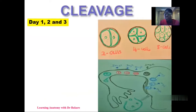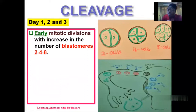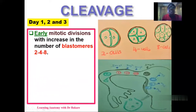The first event is cleavage. For the first three days, we have early mitotic division of the zygote, and this tends to increase the number of cells formed due to mitotic division. This is the early stage of cleavage. We have the later stage of cleavage that will produce the morula, and that will occur on the fourth day. Let's focus first on the first three days, which is the early phase, occurring on the first, second, and third day.